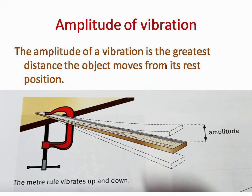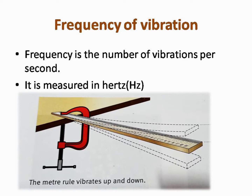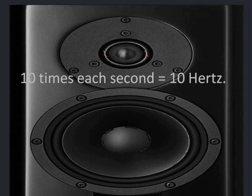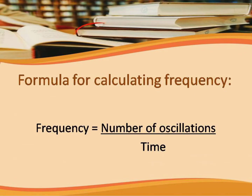The picture shows the amplitude of the vibration. The amplitude of a vibration is the greatest distance the object moves from its rest position. The number of vibrations per second is called the frequency of vibration. Frequency is measured in Hertz. If an object vibrates 10 times each second, we say its frequency is 10 Hertz. You can calculate frequency by taking the number of oscillations and dividing it by time.